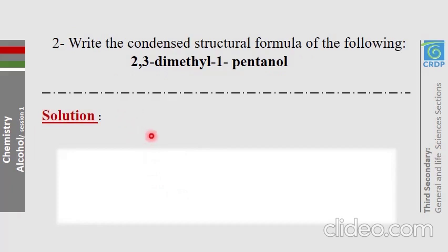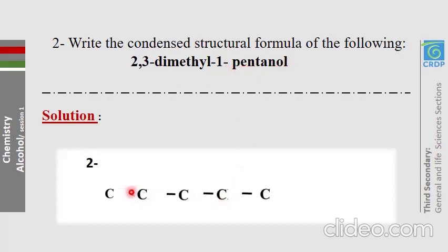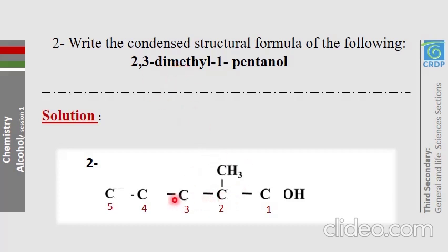Application 2: draw the condensed structural formula of the given organic compound. It is a pentanol with branches. On a paper, put 5 carbon atoms in a row. On carbon number 1 put OH; on carbons 2 and 3, add methyl branches. Then fill each carbon with the appropriate number of hydrogen atoms so that each carbon is saturated.